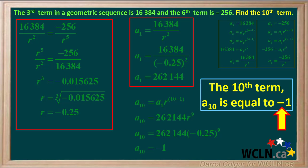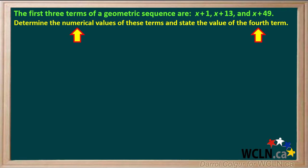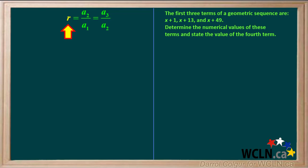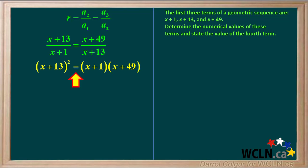We have one more type of problem to look at. We're given that the first three terms of a geometric sequence are x plus 1, x plus 13, and x plus 49. We're asked to determine the numerical values of these terms and state the value of the fourth term. We can solve this problem starting with the common ratio r. r is equal to the ratio of term two to term one, which is equal to the ratio of term three to term two. The ratio of term two to term one is (x+13)/(x+1), and the ratio of term three to term two is (x+49)/(x+13). Cross-multiplying gives us (x+13)² equals (x+1)(x+49).